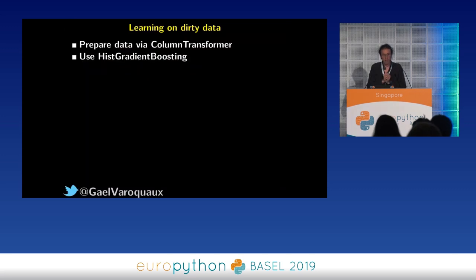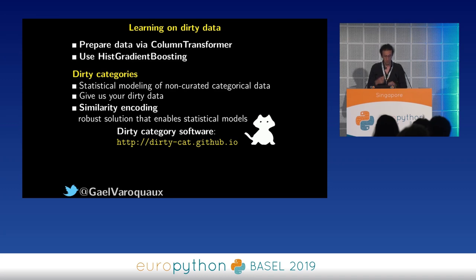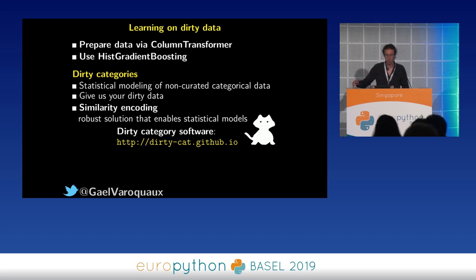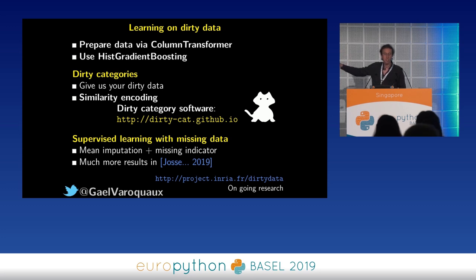To wrap up: learning on dirty data — first take-home message, prepare the data via ColumnTransformer; second, use gradient boosting, it really works well on this kind of data and is robust to all kinds of weird entries. For dirty categories, we're interested in statistical modeling on non-curated critical data — please help us by sharing your dirty data with prediction tasks, it helps us benchmark. We have similarity encoding and more work coming soon. For supervised learning with missing data, mean imputation with a missing indicator is actually a pretty good choice. And if you're interested in this area, we have the Dirty Data research project with ongoing and future research. Thank you.